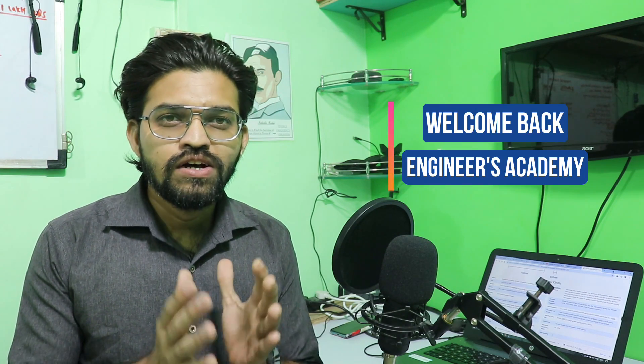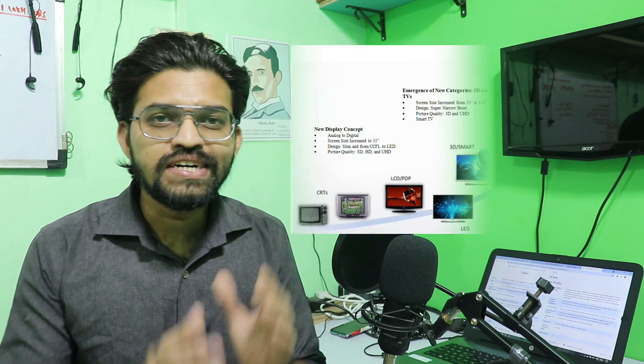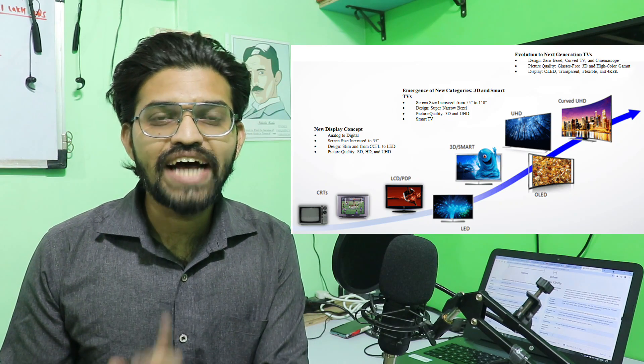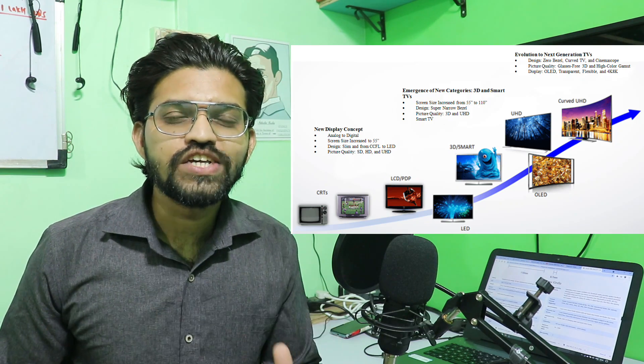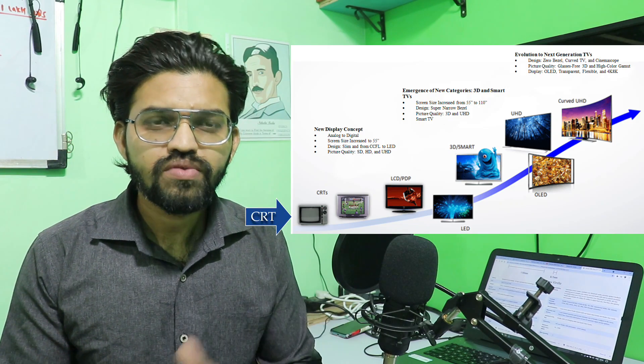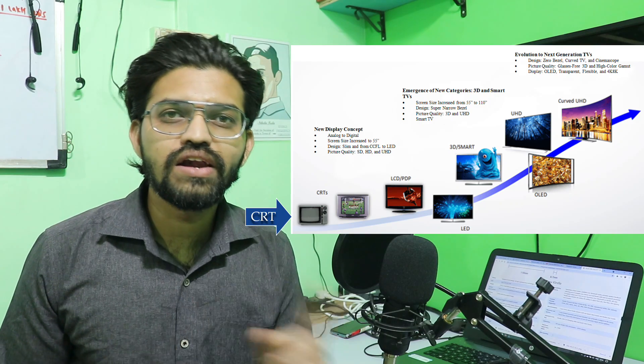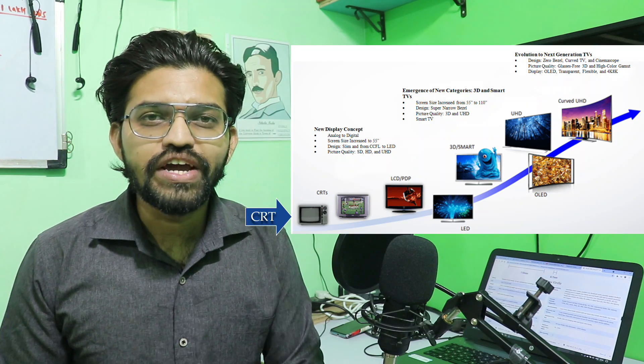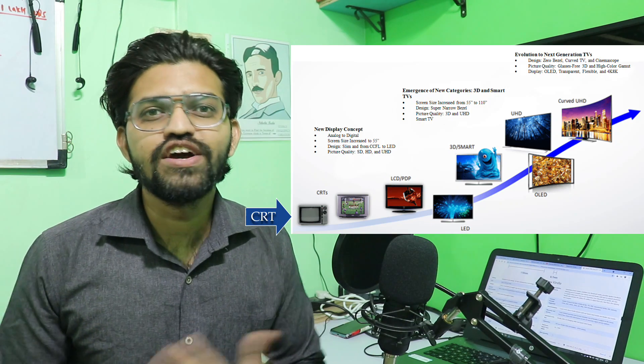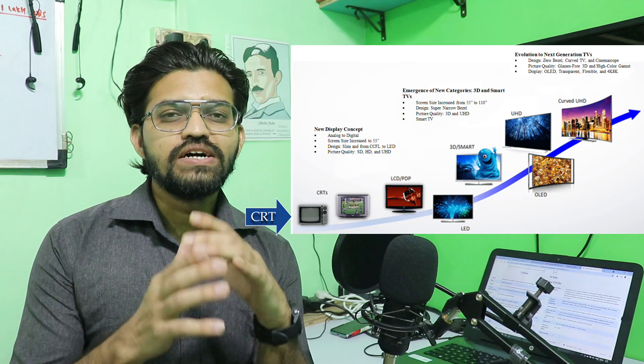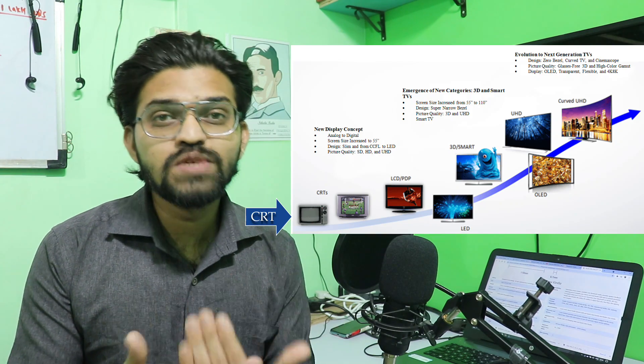Welcome back to another video of Engineers Academy. When we talk about the displays of different smartphones, televisions, cameras, or devices used in different industries, displays over the years have been becoming very thin and flexible. In earlier days we were using CRT - cathode ray tubes - implemented in earlier televisions, but nowadays televisions are becoming thin.